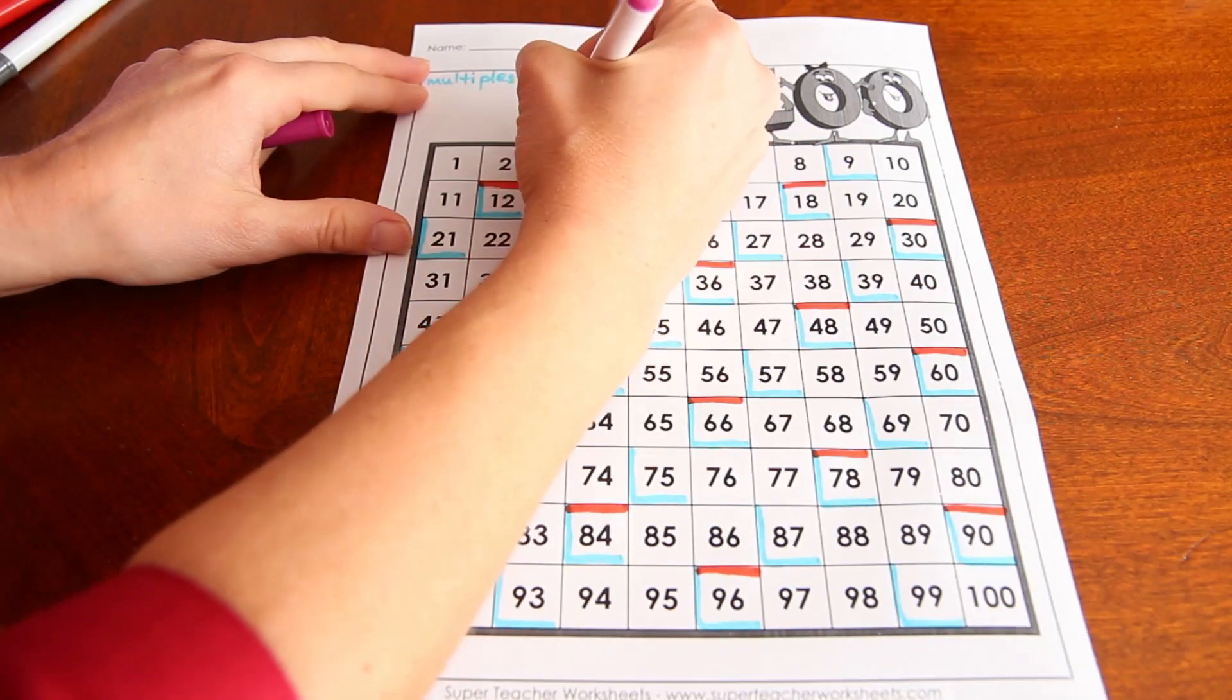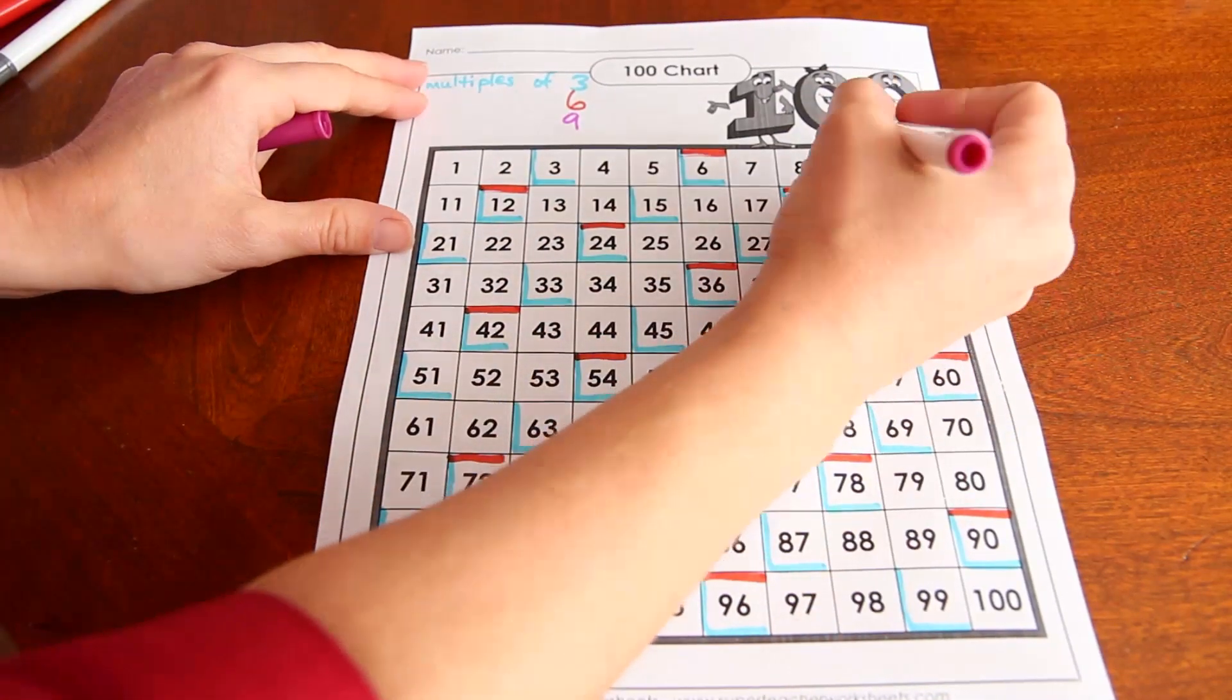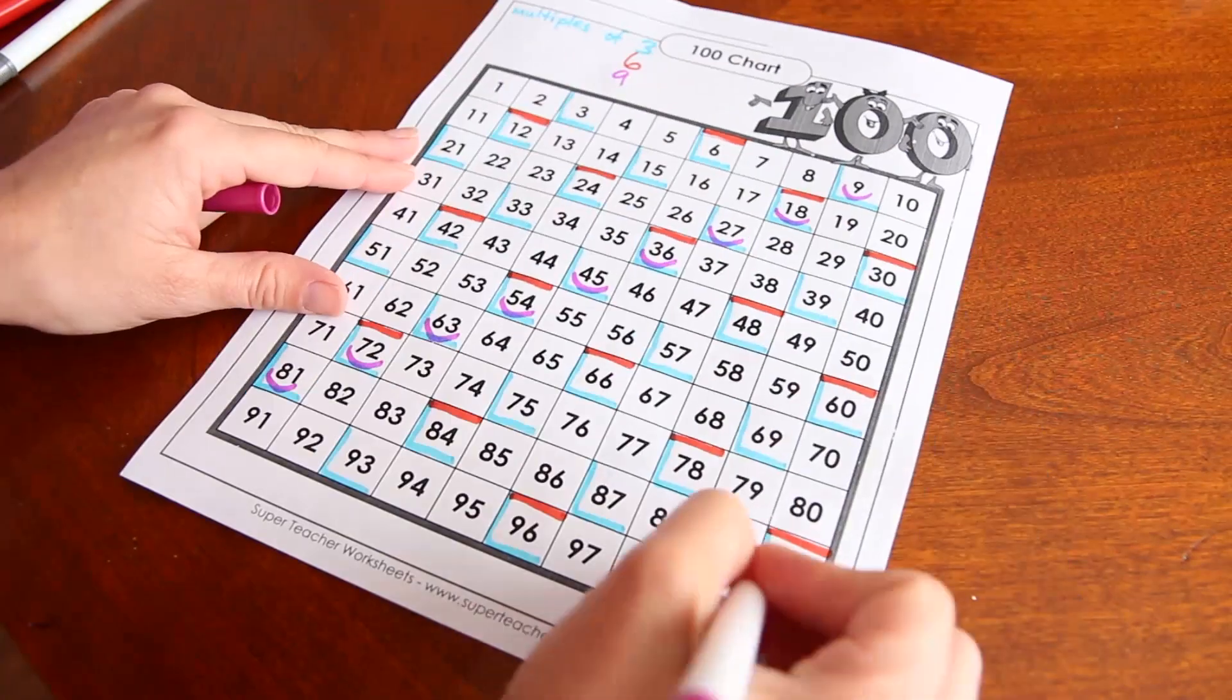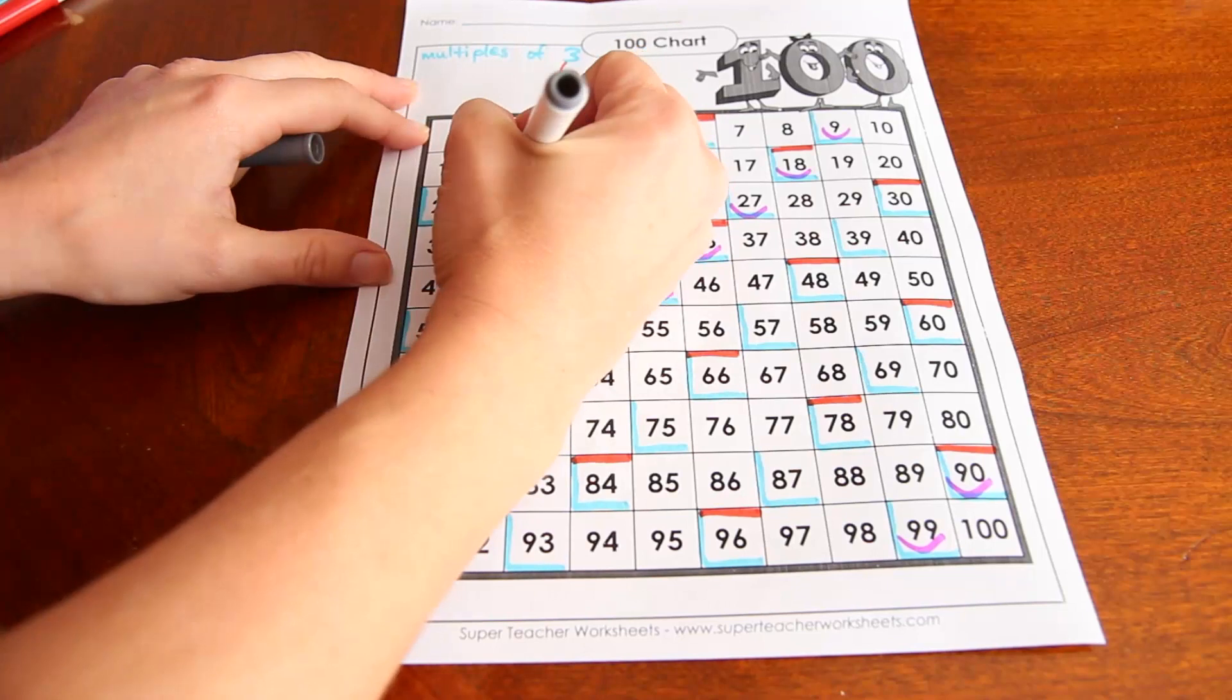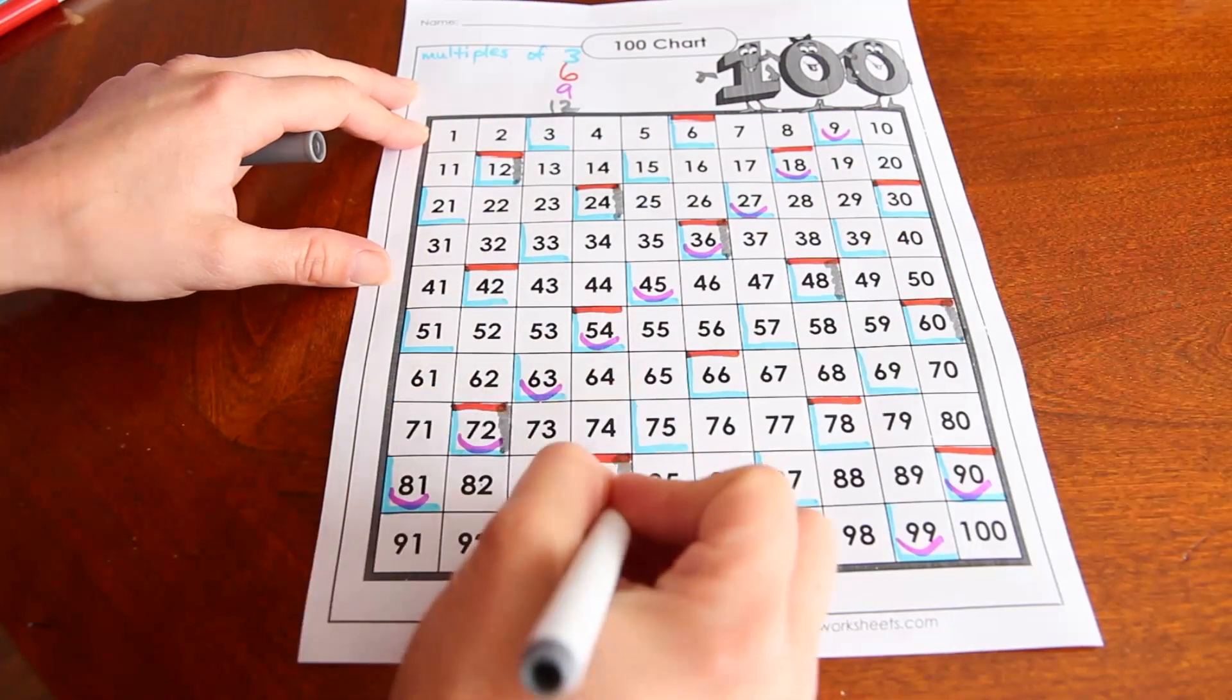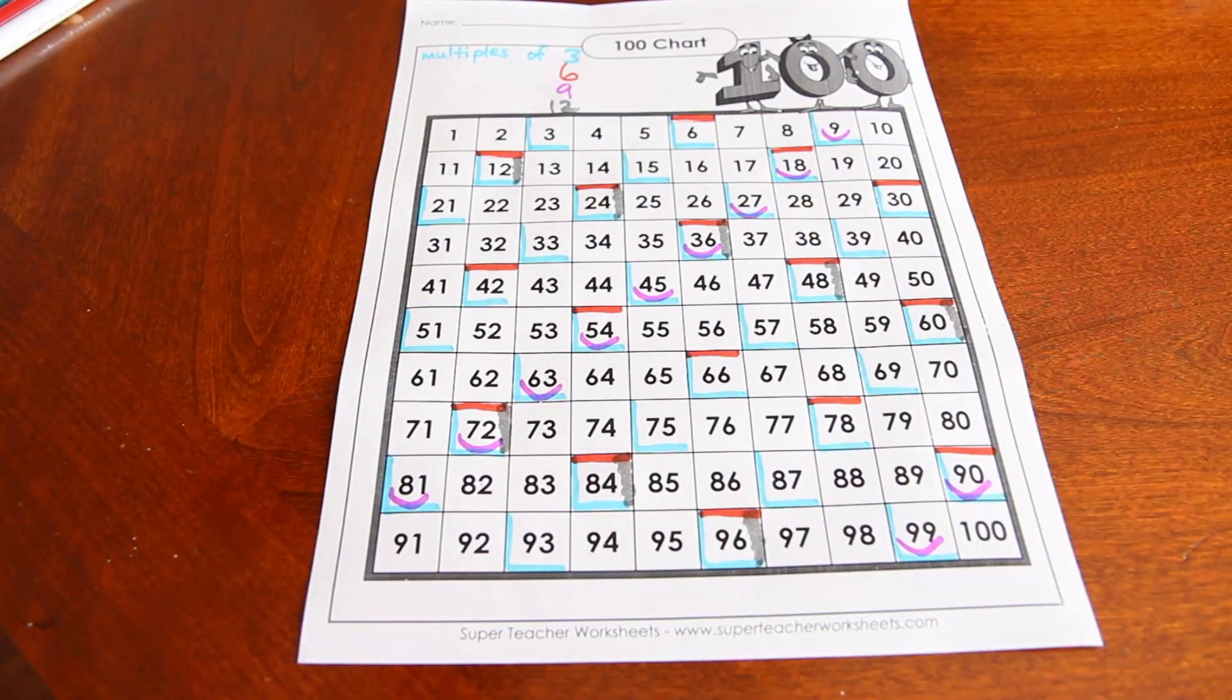Next we'll do the multiples of 9. And let's do 12. And there you have it. The multiples of 3, 6, 9, and 12.